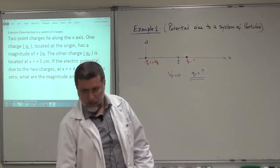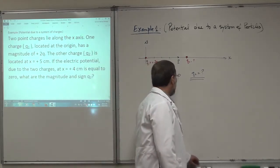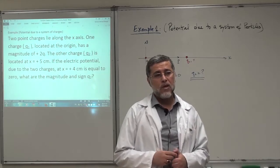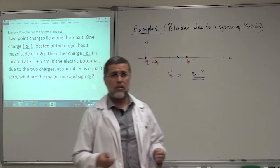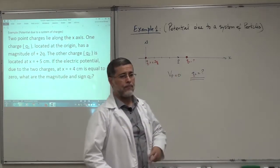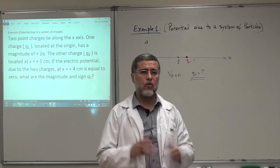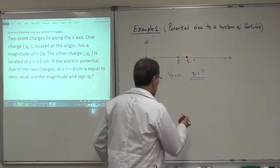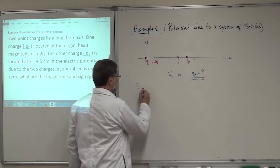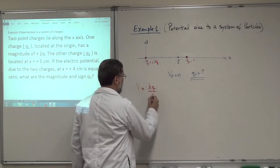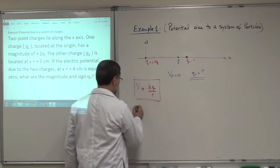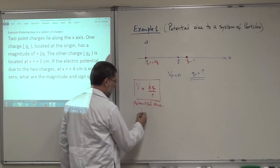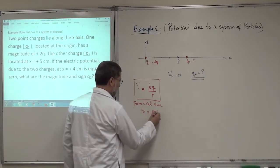Remember, the potential is a scalar, and this makes life easy for you, because it's easier to deal with scalars than with vectors. Vectors are very difficult — you have to look at components and so on. Here, there are no components. The potential due to a point charge is KQ over R. This is the potential at distance R from the point charge.